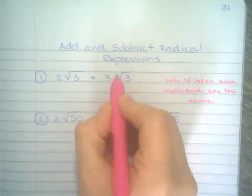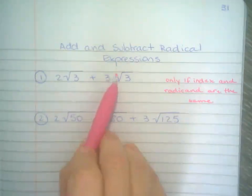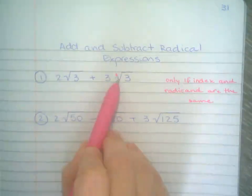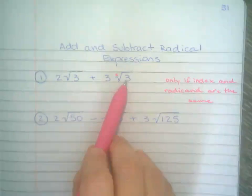Remember that the index is that invisible number that is right there, that little number that goes on the side of the root. That's called the index. The radicand is the number that goes under the root.